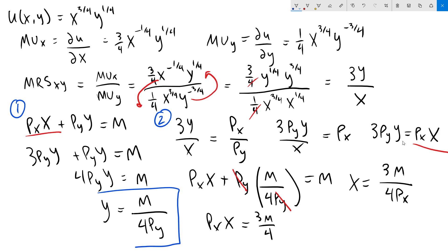So our demand functions are going to be y equals m over 4 Py, and x equals 3m over 4 Px.